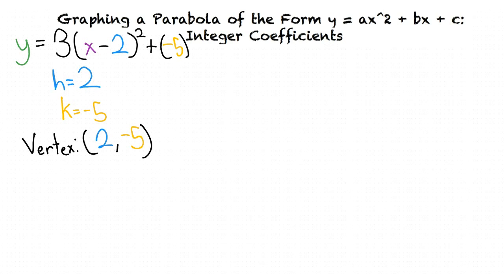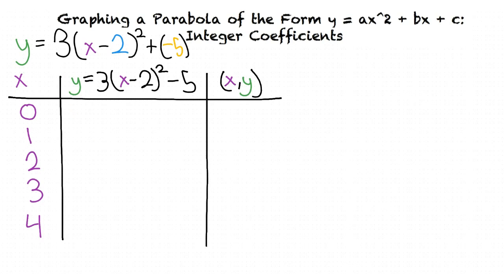With this information, we can now graph our parabola. Pick two x values to the left of our vertex and two x values to the right of our vertex. In this case, it will be 0, 1, 2, 3, 4. We plug these x values into our new function to get our y values.